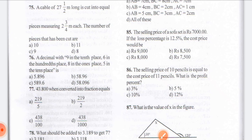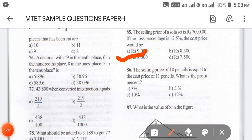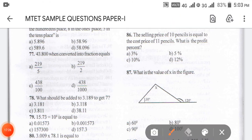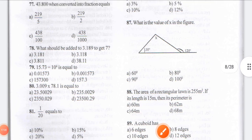The cost price is option C — 8,000. Please check your answers. Coming to question 86: the selling price of 10 pencils is equal to the cost price of 11 pencils. What will the profit percentage be? The answer for 86 is option C.